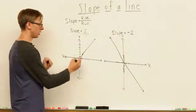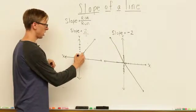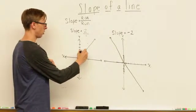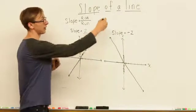Rise of 2, run of 1. So we go up 2 and over 1 right there, up 2 and over 1 right there, and we could keep going in that same fashion.